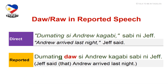Let's go over the third example. The direct speech is: 'Dumating si Andrew kagabi,' sabi ni Jeff. Dumating means 'arrived' and kagabi means 'last night' — Andrew arrived last night, Jeff said. To switch to reported speech: dumating ends with a consonant, so we use daw. Dumating daw si Andrew kagabi, sabi ni Jeff — Jeff said Andrew arrived last night.